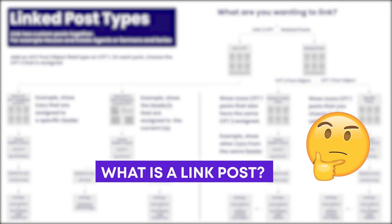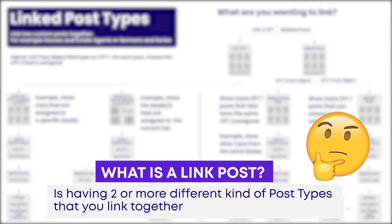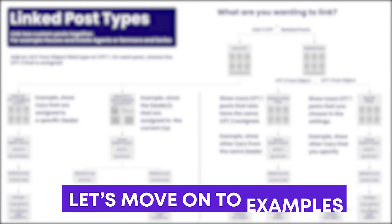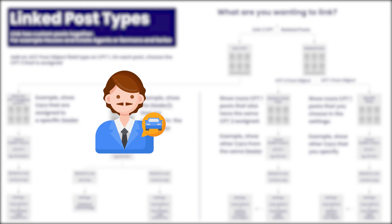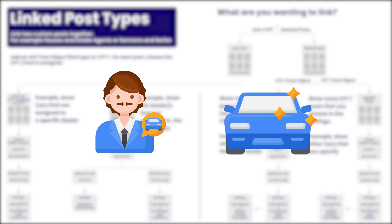The best way for us to dive into this is to start talking about what a linked post type is. Basically, linked post types are any type of relationship where there's a one-to-many relationship. We're going to be working with an example in this video — a car dealer and cars. So we're going to have the car dealer post type, which is the one, and then we're going to have the car post type, which is the many.